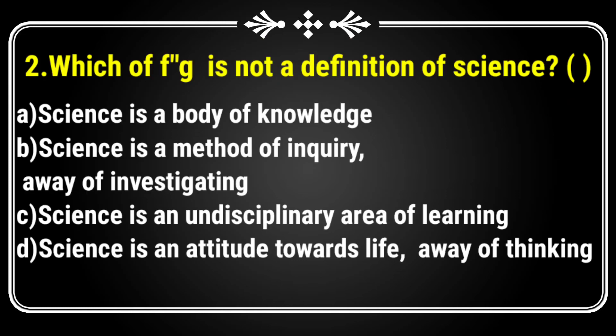Which of the following is not a definition of science? Options: Science is a body of knowledge; science is a method of inquiry and way of investigation; science is an undisciplinary area of learning; science is an attitude towards life. The answer is Option C — 'undisciplinary area of learning' is wrong, as science is an interdisciplinary area.